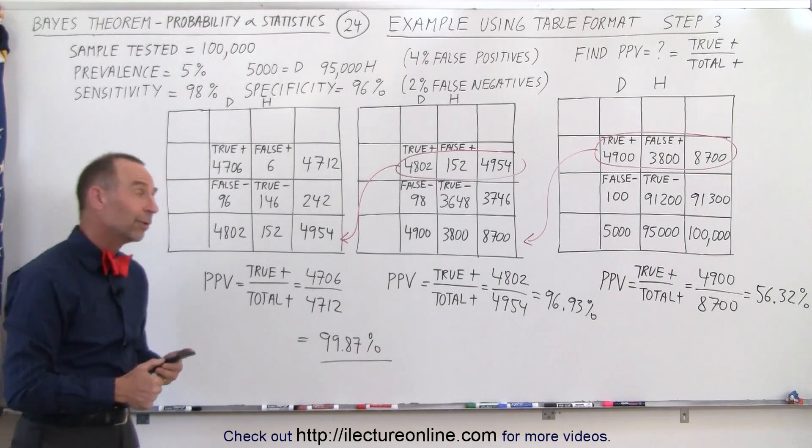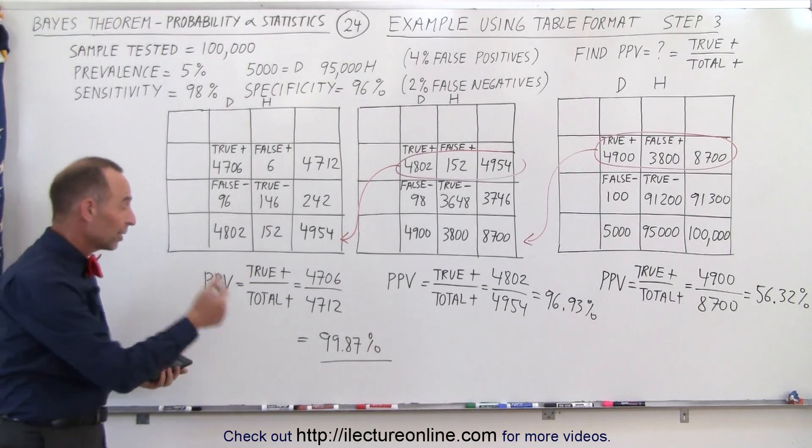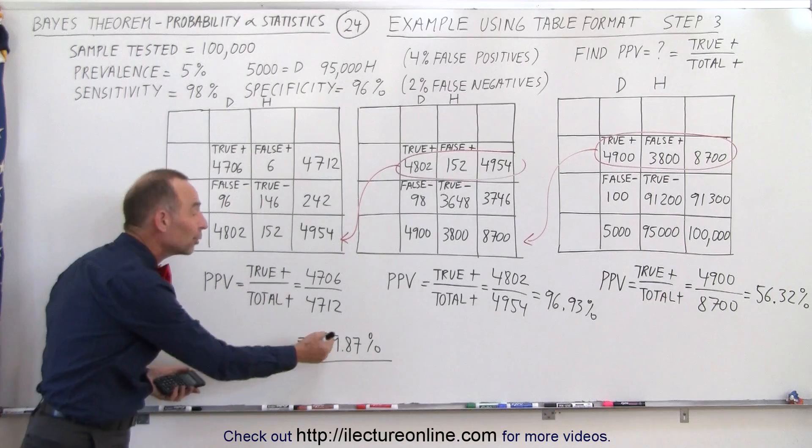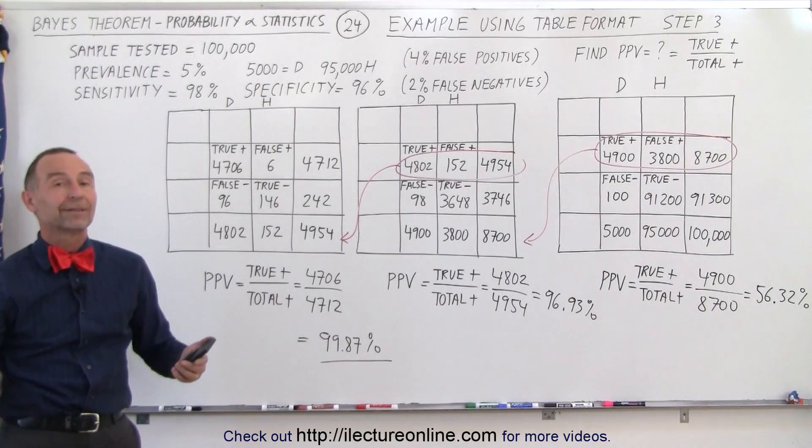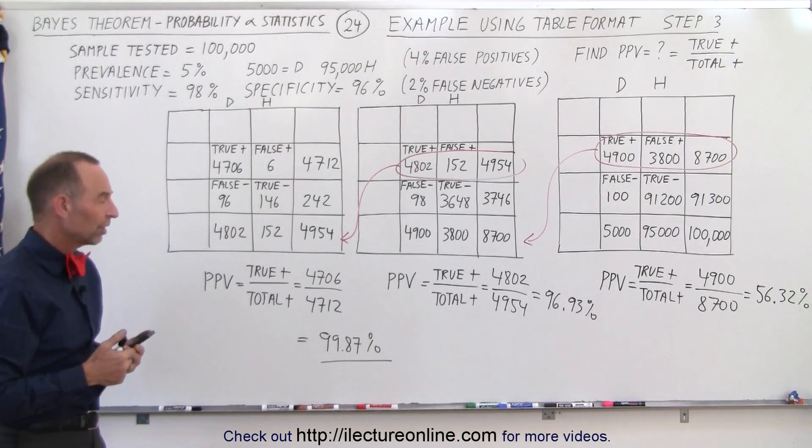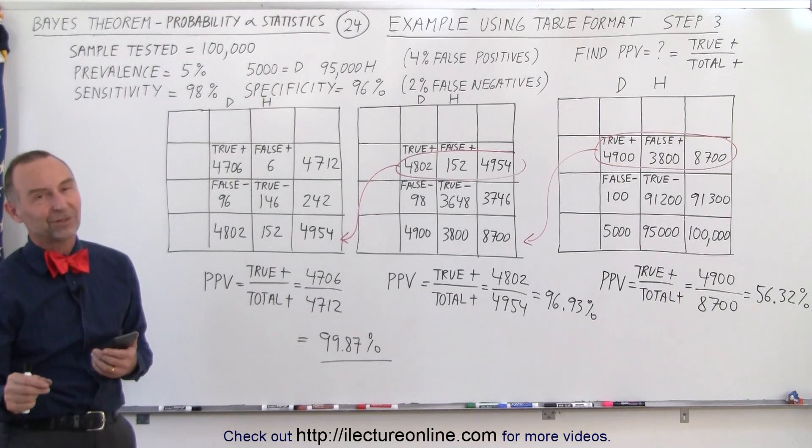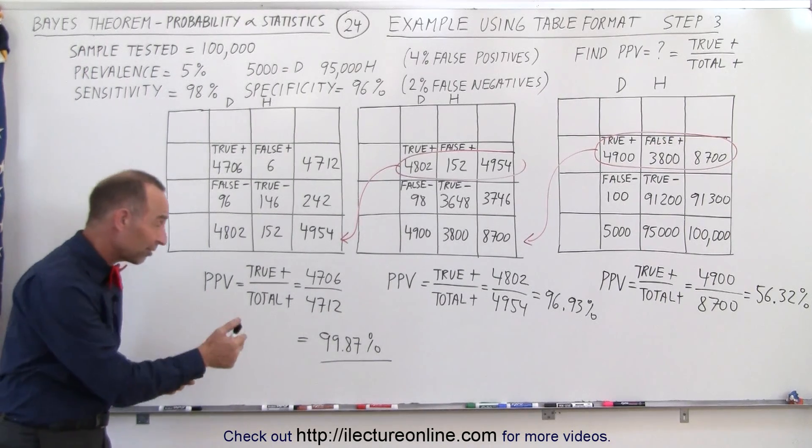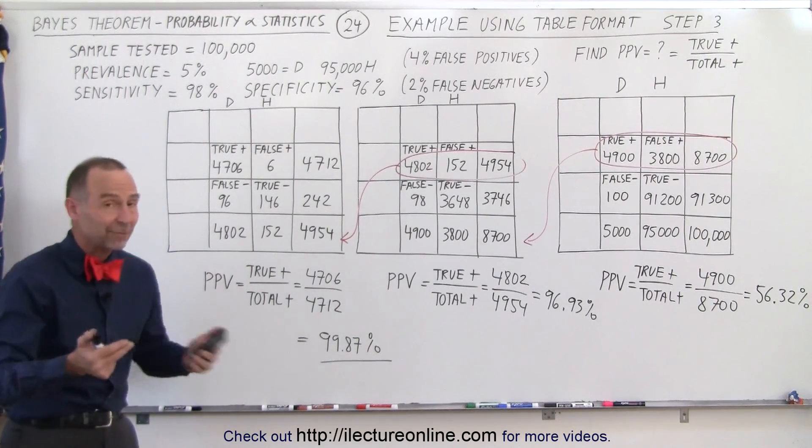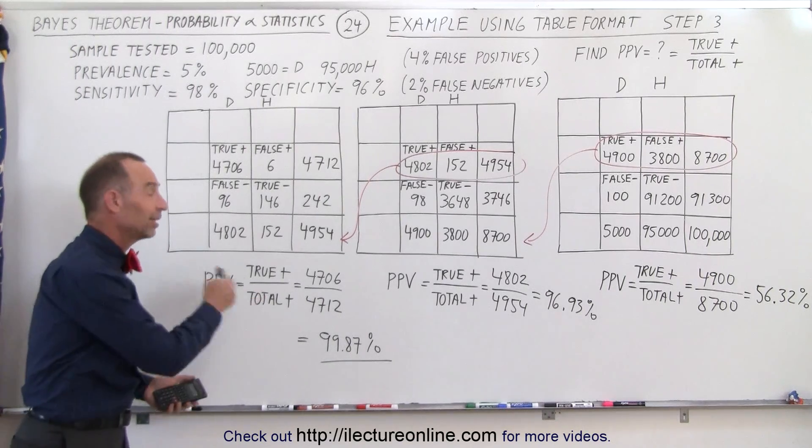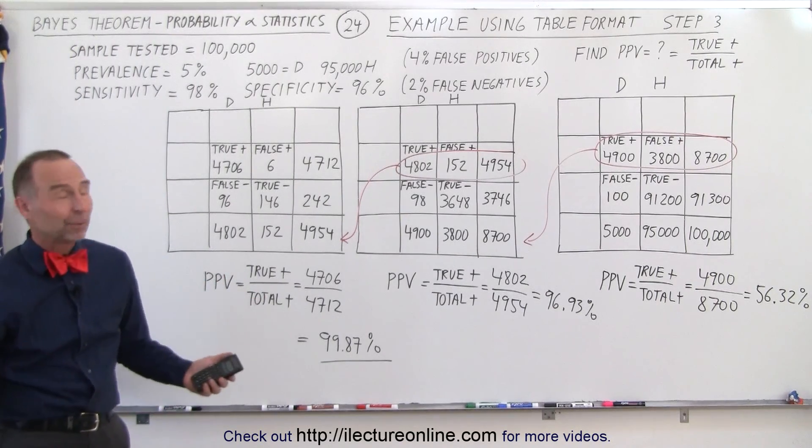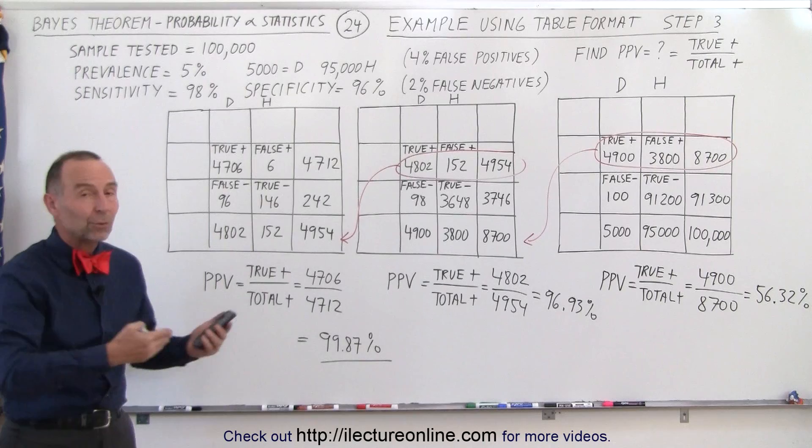So now we can say to the patient, well we tested you three times and three times it came out positive, we're 99.87% certain that you have the condition we're testing for. It's not 100%. Does that mean there's still a possibility that you test positive three times and you don't have the condition? Certainly there is. Are there possibilities that the test has some other problems that we don't know about?